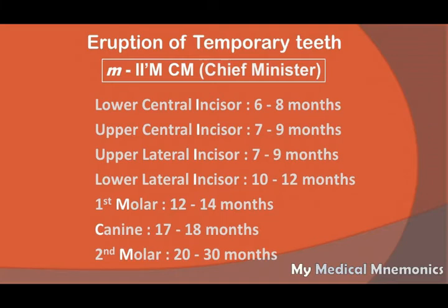One important thing: the eruption of central incisor in upper jaw and lower jaw does not happen at the same time. Lower central incisor erupts first at around six to eight months, then upper central incisor at around seven to nine months. At the same time, upper lateral incisor erupts at seven to nine months, then lower lateral incisor at around ten to twelve months. First molar, whether upper or lower jaw, erupts at the same time, around twelve to fourteen months.